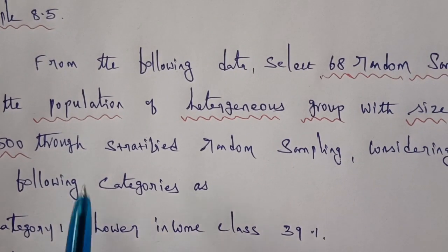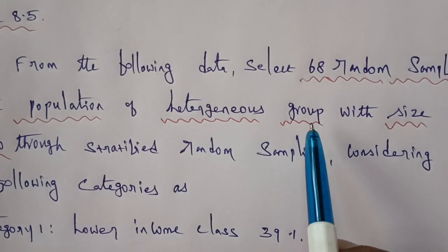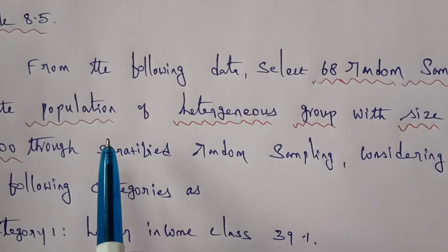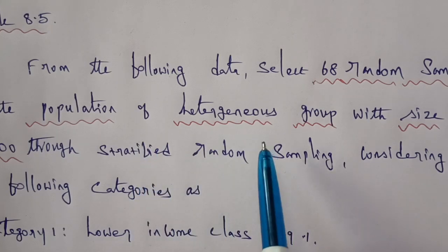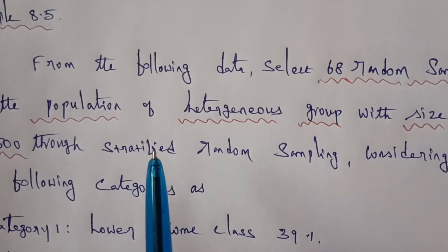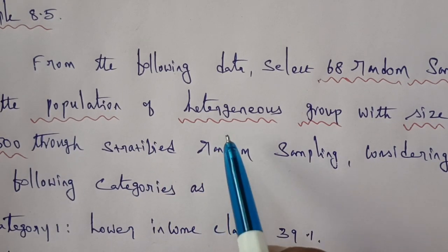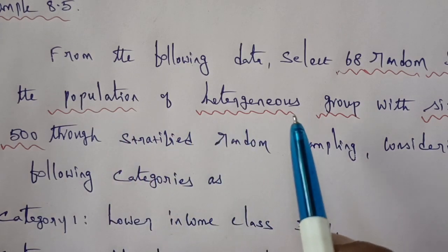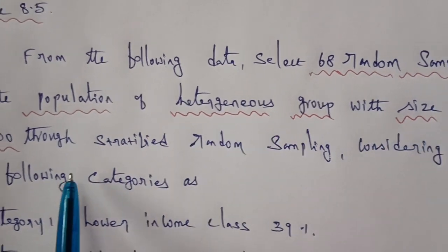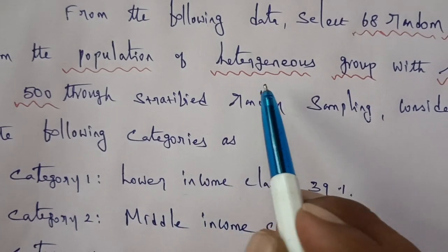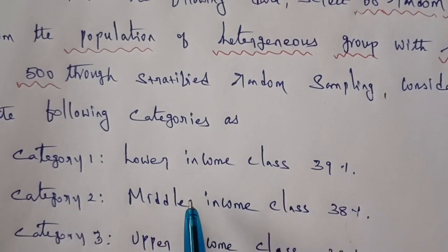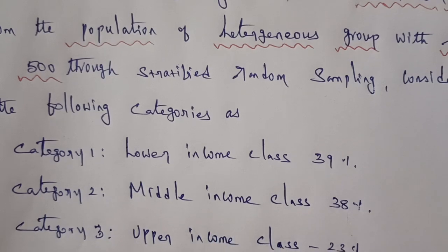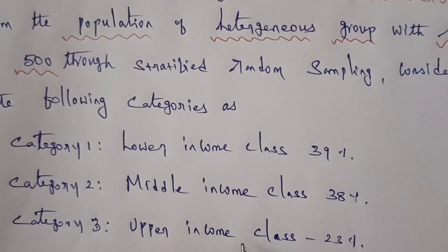The population of hitters in the group has a size of 500, and the hitters are divided into 3 categories: lower income class, middle income class, and upper income class.